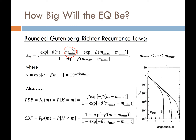Using the bounded Gutenberg-Richter equation with beta terms, we plug in alpha and beta — where alpha equals 2.303 times A and beta equals 2.303 times B. The term nu is what we call the mean annual rate of exceedance for the minimum magnitude event — the mean annual rate of exceeding the minimum earthquake magnitude.